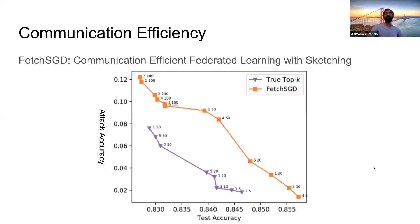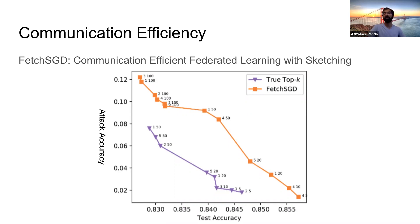We now turn our attention to designing a communication-efficient version of SparseFed. FetchSGD is a paper I co-authored at ICML last year which uses sketches to compress gradients, and we use the backbone of that algorithm to improve SparseFed. Here we compare the Pareto frontier of the attack parameters we tune, which includes the number of epochs of PGD the attack performs and the minibatch size. SparseFed implemented with TrueTopK — the algorithm shown in previous experiments — and SparseFed implemented with FetchSGD, which uploads sketches to the parameter server, both appear on this frontier. We conclude that by combining SparseFed and FetchSGD, we can obtain an algorithm which mitigates attacks and is communication efficient.